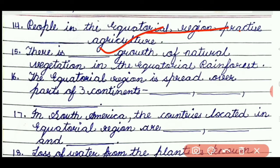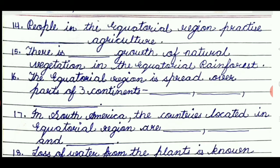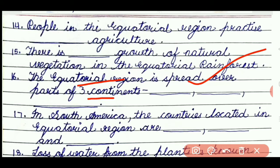Question number 15: there is dash growth of natural vegetation in the equatorial rainforest. The answer will be luxuriant. Question number 16: the equatorial region is spread over parts of three continents. They are Asia, Africa and South America.